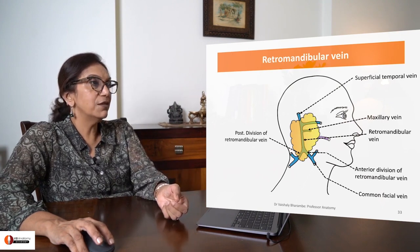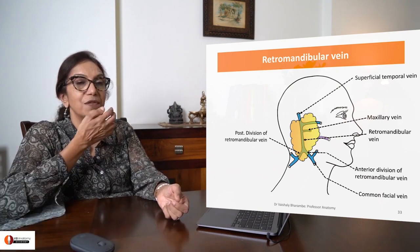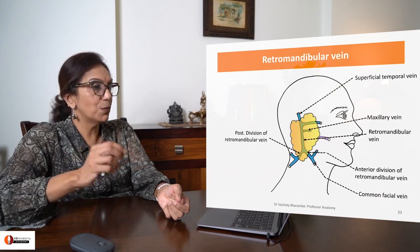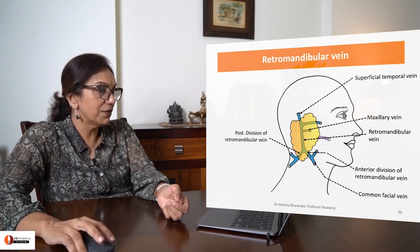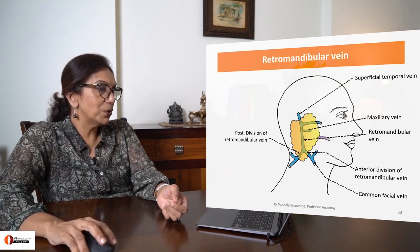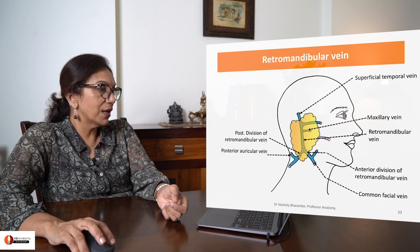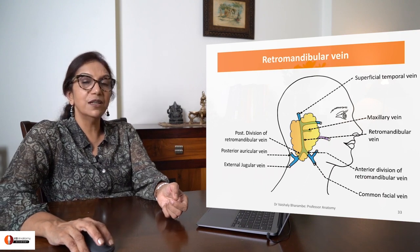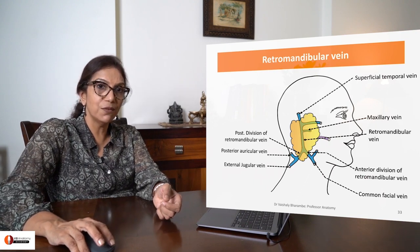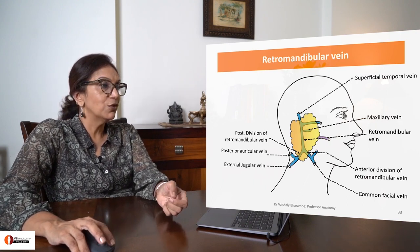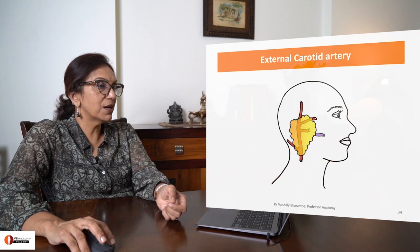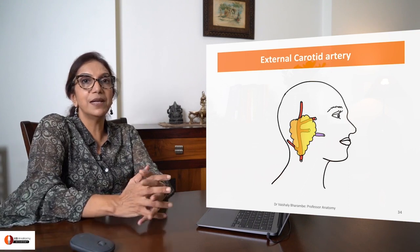The anterior division meets with the facial vein to form the common facial vein, while the posterior division meets with the posterior auricular vein to form the external jugular vein. So that completes the retromandibular vein.